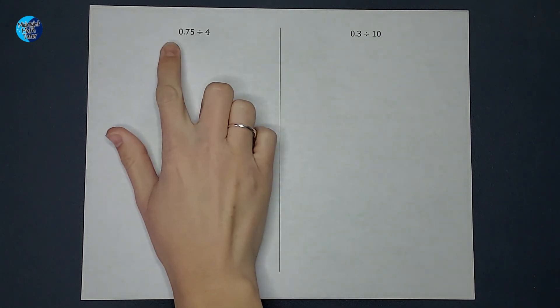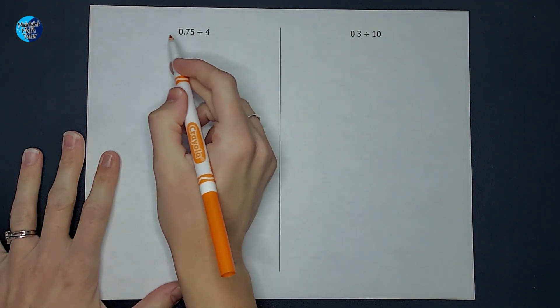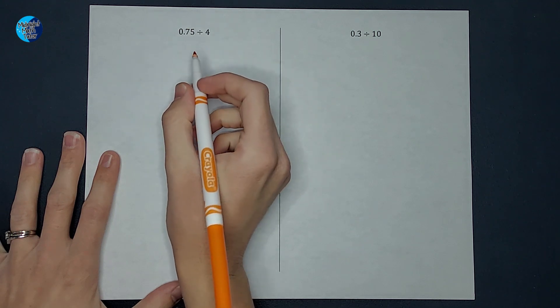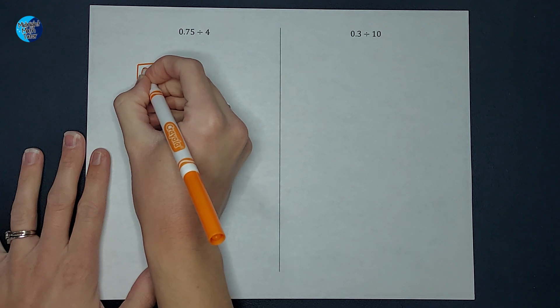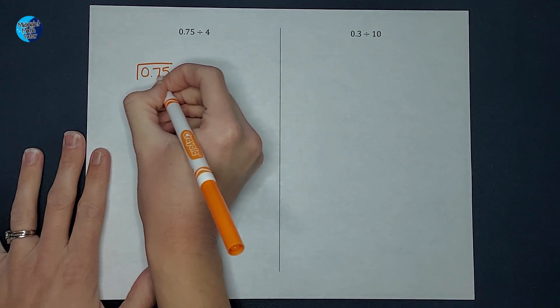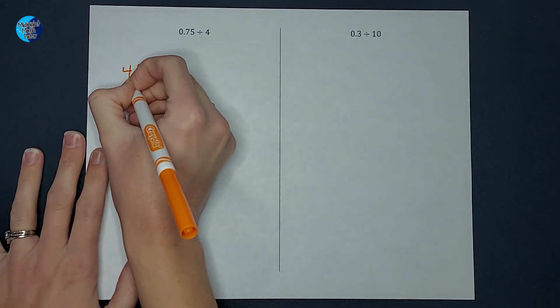Hey guys, we are going to divide a couple decimals by whole numbers. So in order to do this I'm going to do a little long division. When I do long division the first number goes in the box. So I'm going to have 0.75 here and 4 here.